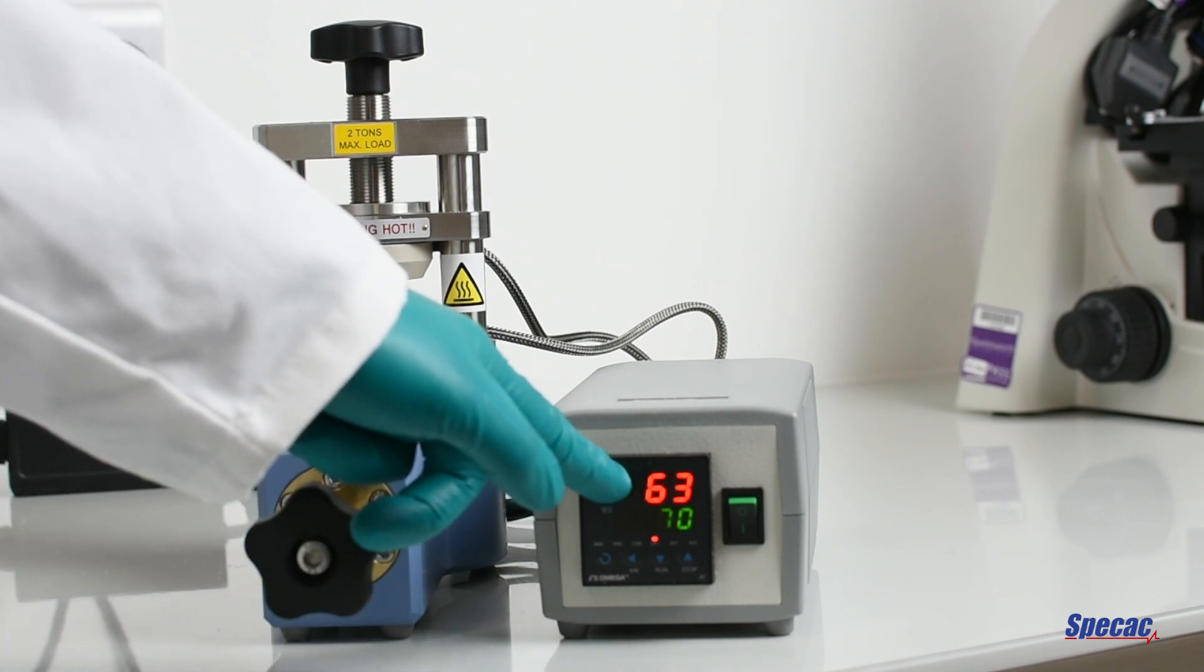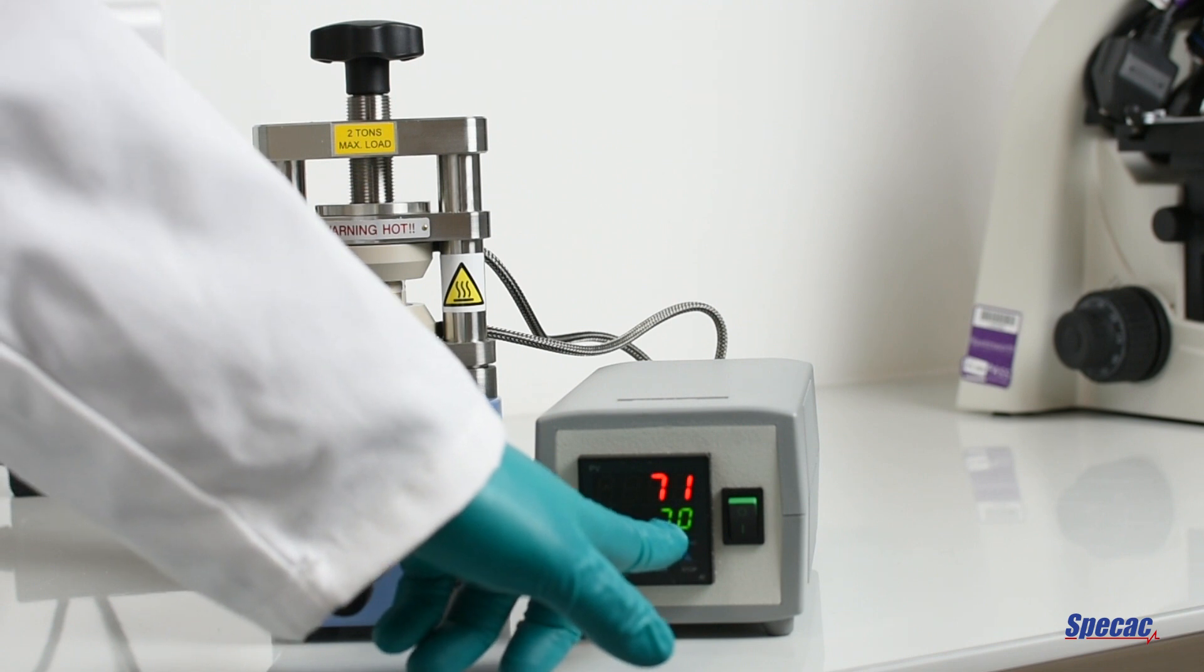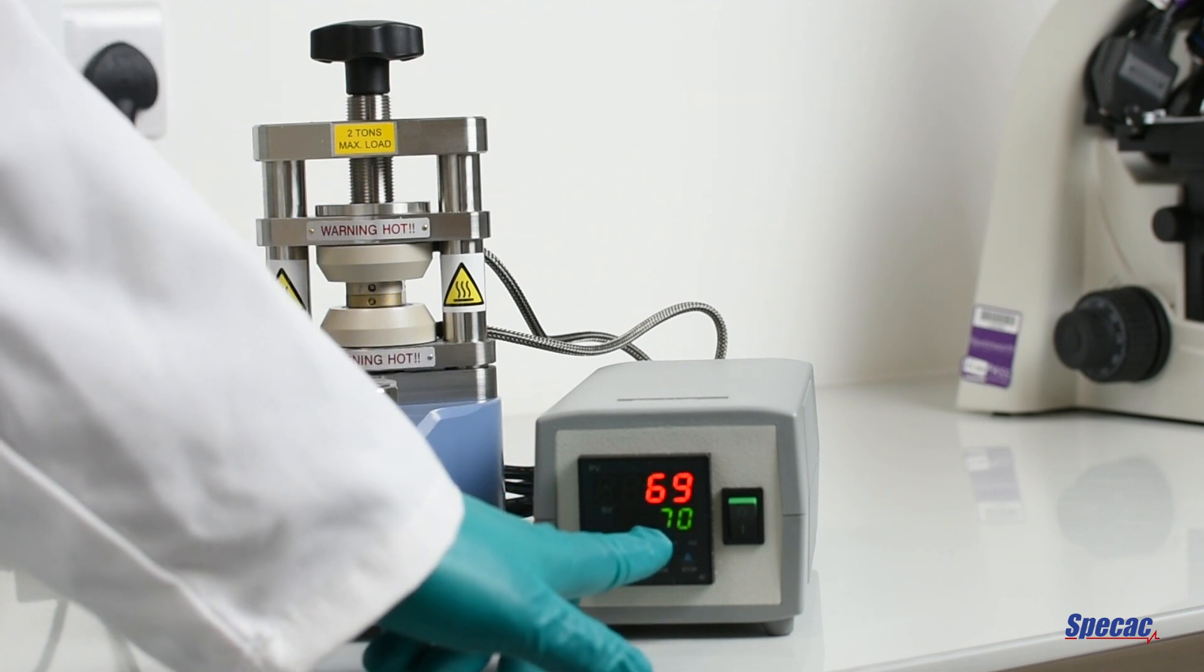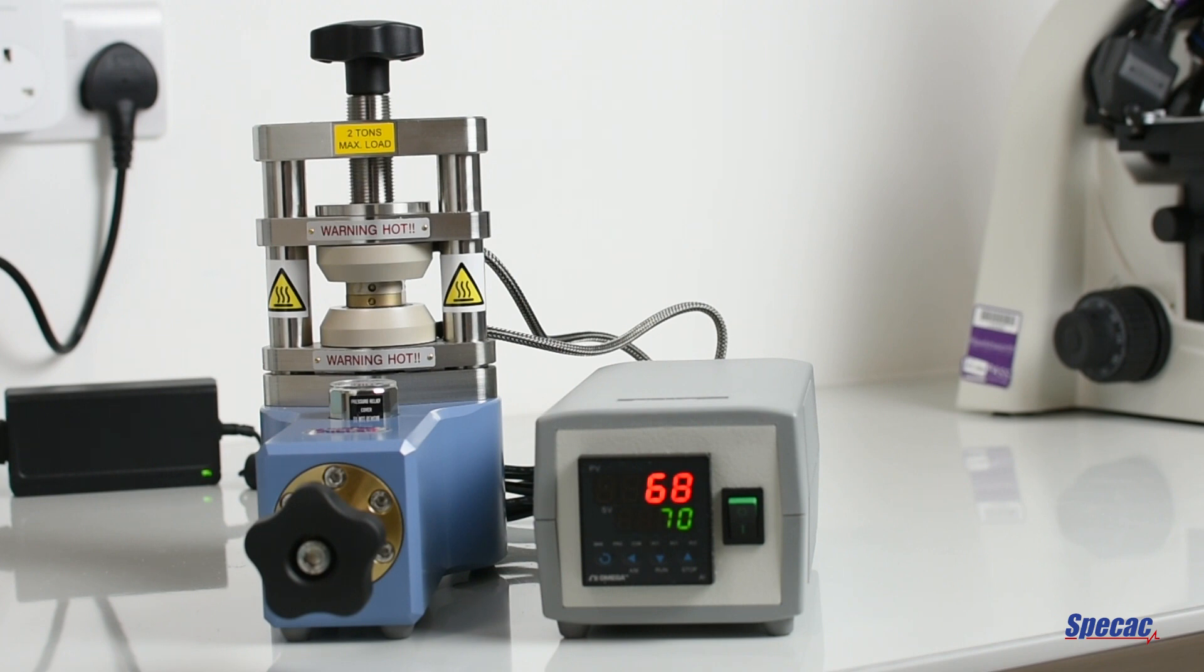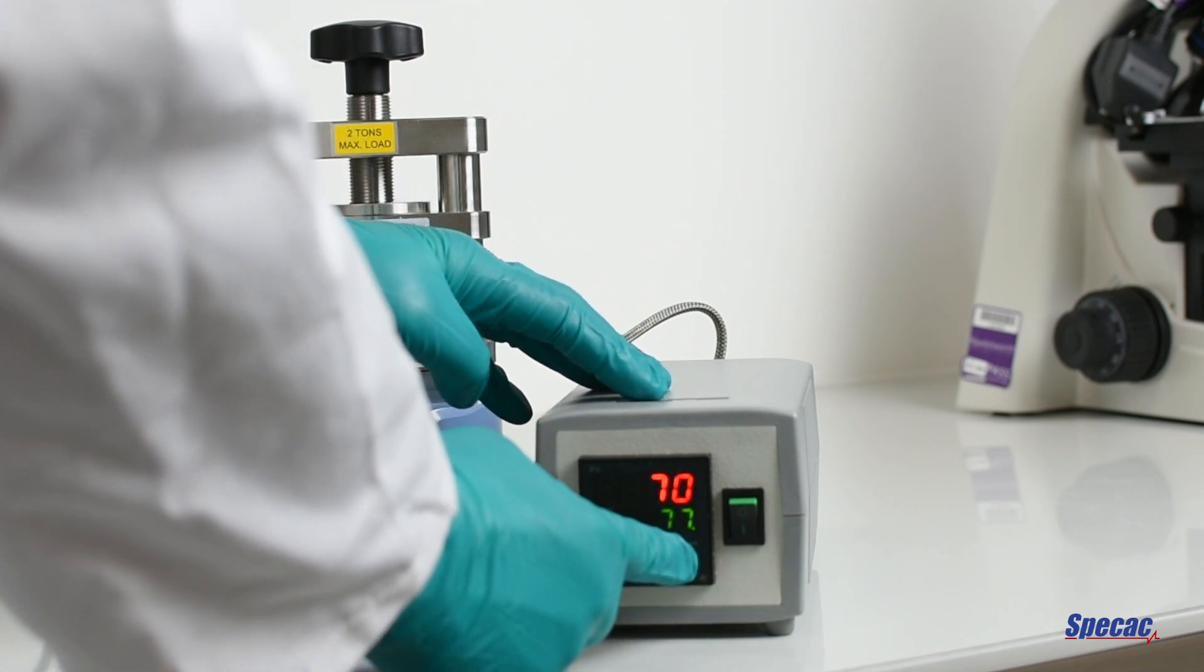The top value is the current temperature. The bottom value is the target temperature. Set a value somewhat above the melting point of the polymer using the up and down keys on the front of the controller. In this case we're setting 130 degrees.